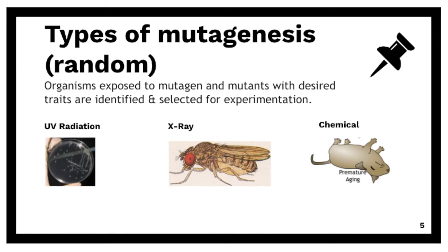For example, we can expose bacteria to UV radiation, or Drosophila to X-rays, or even expose mice to certain chemical mutagens to get the phenotypes or the mutants we need.